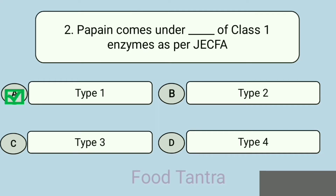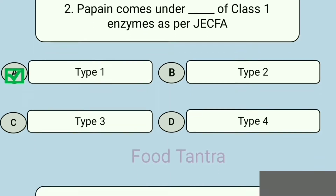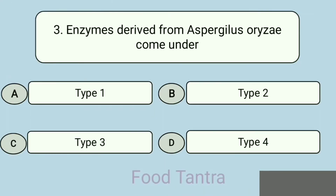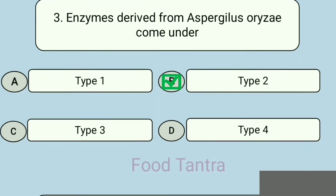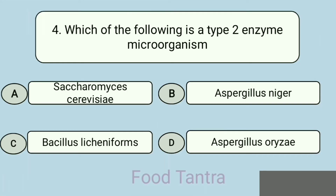Question 3: Enzymes derived from Aspergillus oryzae come under which type? Option A: Type 1. Option B: Type 2. Option C: Type 3. Option D: Type 4. Answer: Type 2. Question 4: Which of the following is a Type 2 enzyme microorganism? Option A: Saccharomyces cerevisiae.